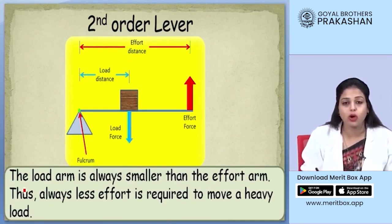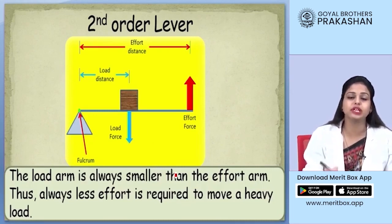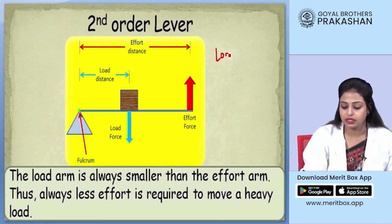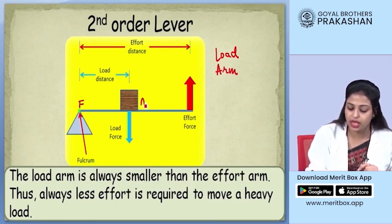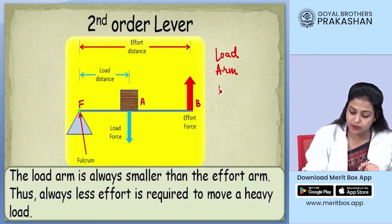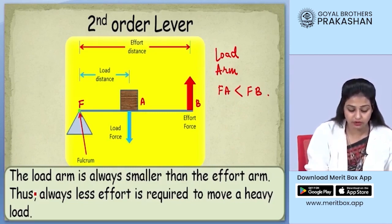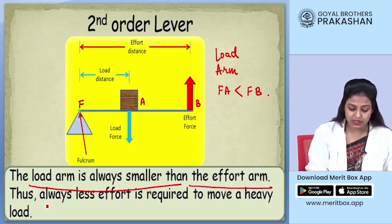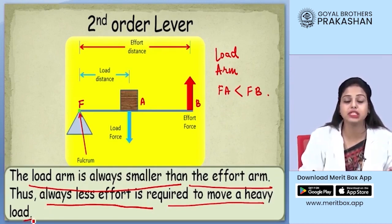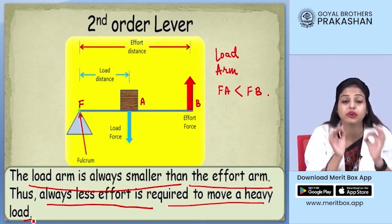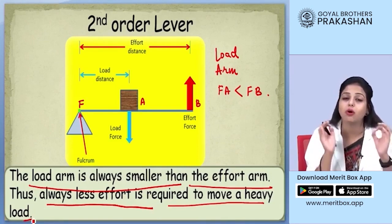In second order lever, the load arm is always smaller. You can see the load is situated between the effort and the fulcrum, so it is a must that the load arm — let's say point A to fulcrum — is always less than the effort arm, which is point B to fulcrum. Therefore, in a second order lever, the load arm is always smaller than the effort arm, and the effort required to move a heavy load is always less.